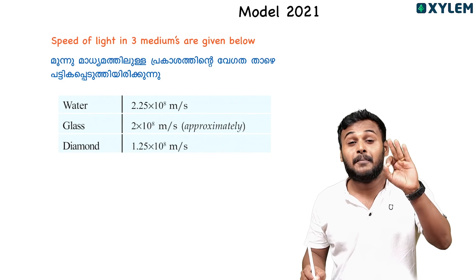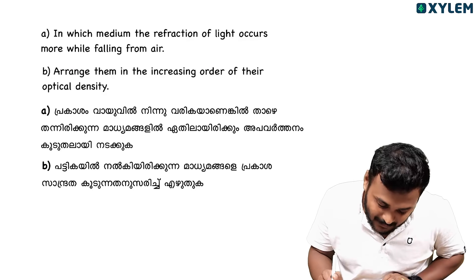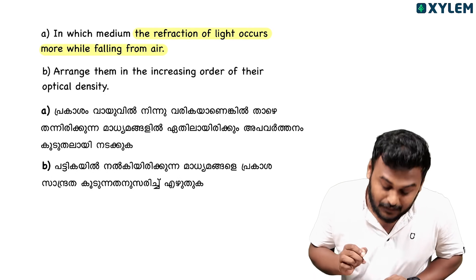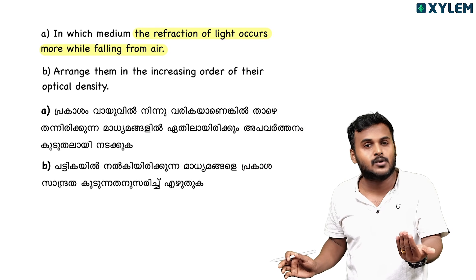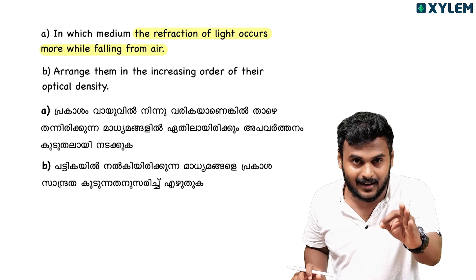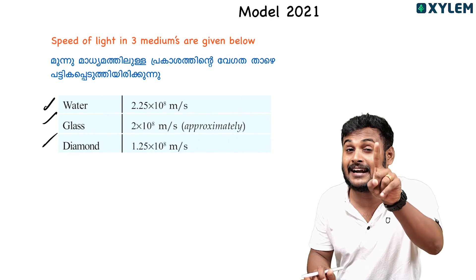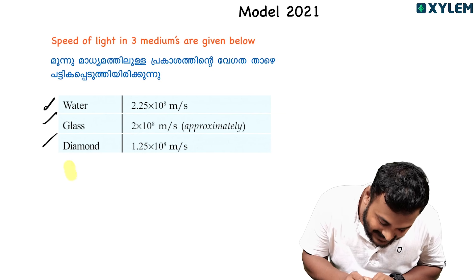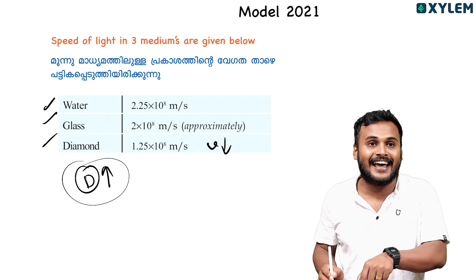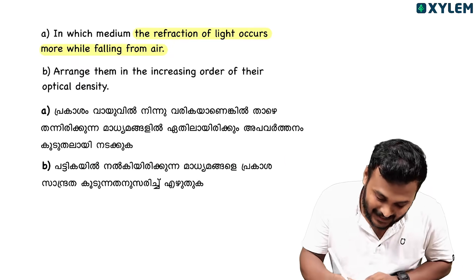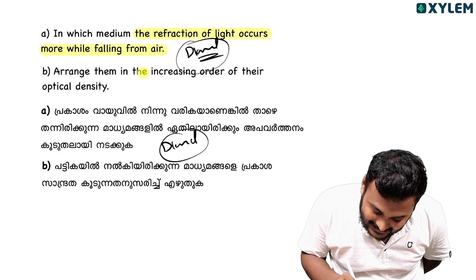Speed of light in three mediums is given. The refraction of light occurs more while falling from air to diamond. Arrange them in increasing order of their optical density.